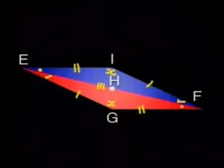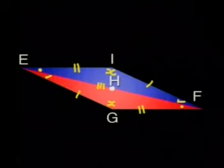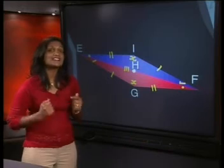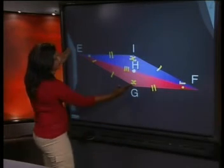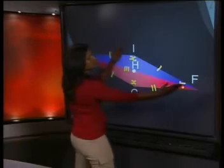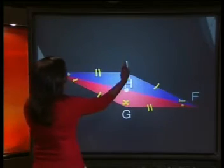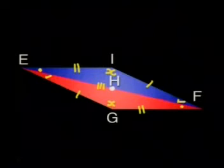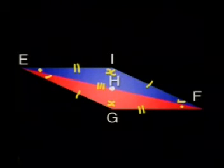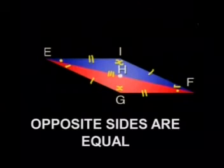We have made a parallelogram! Can you identify any of the properties of the parallelogram? Let's start with the lengths of the sides. We know that EG is equal in length to IF, and EI is equal in length to GF. This means that in a parallelogram, the opposite sides are equal to each other.